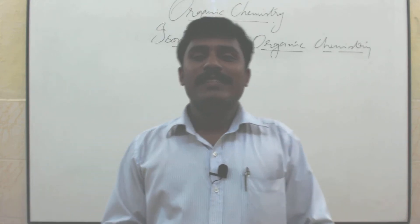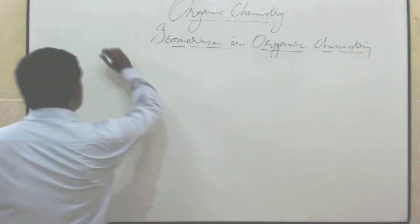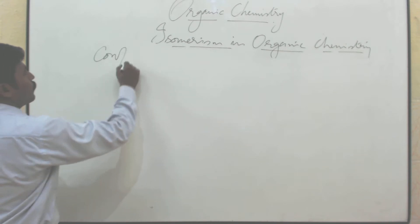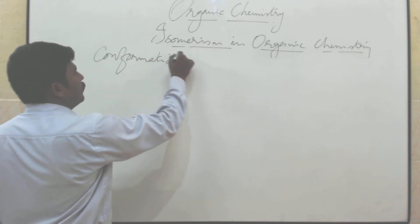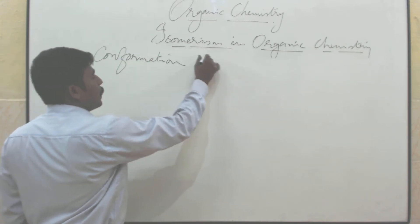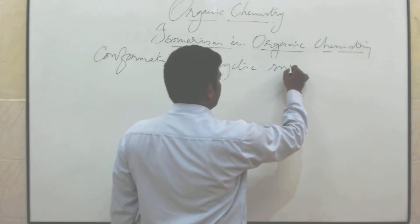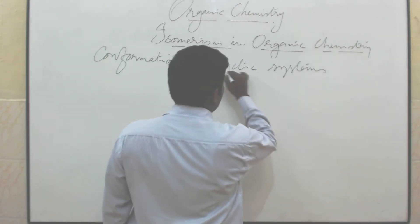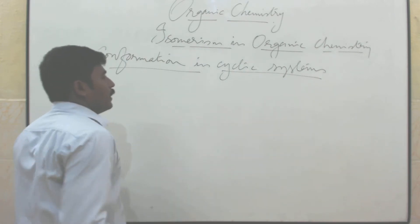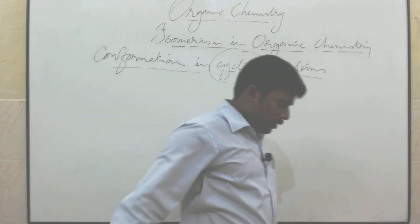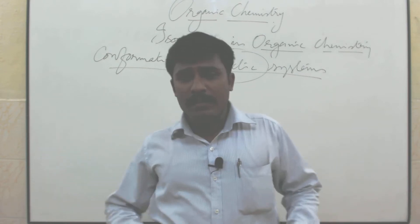The next topic is confirmation in cyclic systems — cyclic form. How many carbons are needed to form a cycle? Any idea?